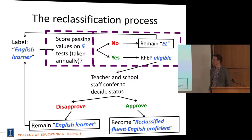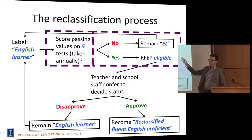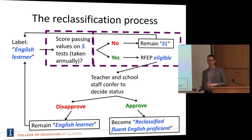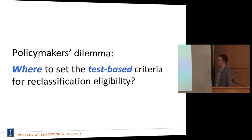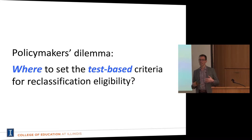If the staff disapprove, the student remains an English learner and has to try again. If they do approve for reclassification-eligible students, then the student finally gets reclassified. From a policy standpoint, policymakers have their strongest influence where they determine what the tests will be and what the thresholds on those tests will be — establishing those who are reclassification eligible versus ineligible.